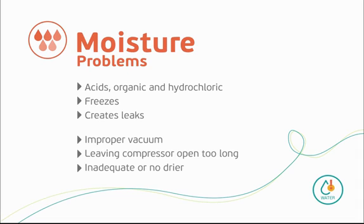Moisture can freeze in the system's metering device, shutting down the system, as well as in braze joints where expansion can crack the joint.